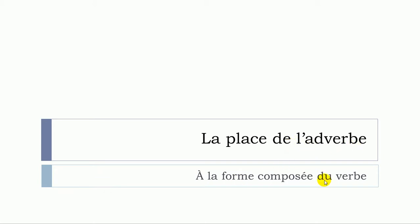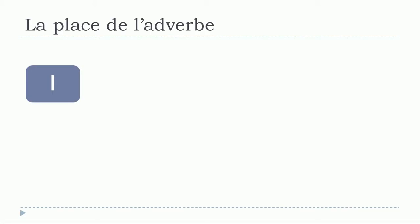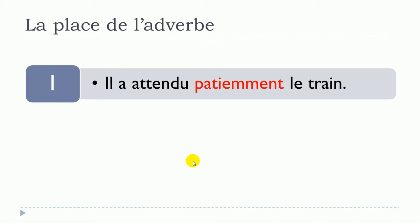We'll see only one sentence and the different possibilities for where to put the adverb when we've got this type of structure. The first example is: il a attendu patiemment le train. Here we've got the verb attendre — to wait — in the passé composé form. So first you've got avoir at the present tense, then the participe passé. Il a attendu, and the adverb patiemment — patiently — comes after the verb, then le train.